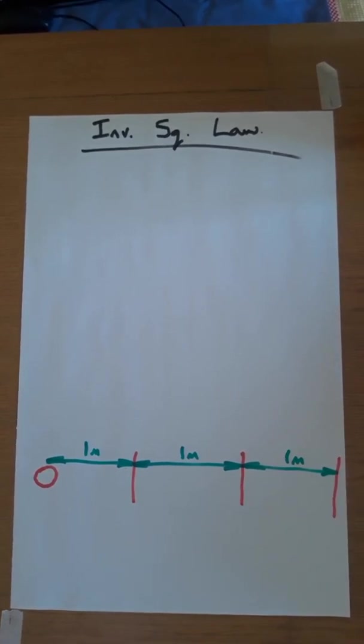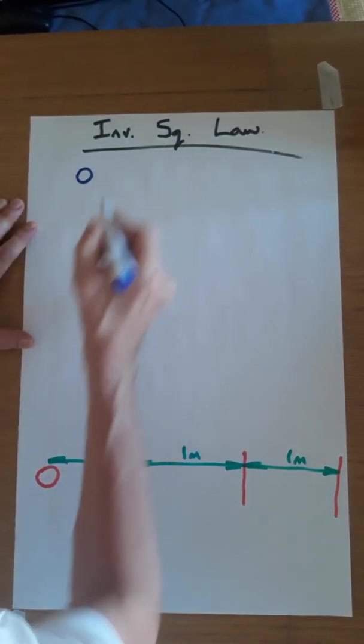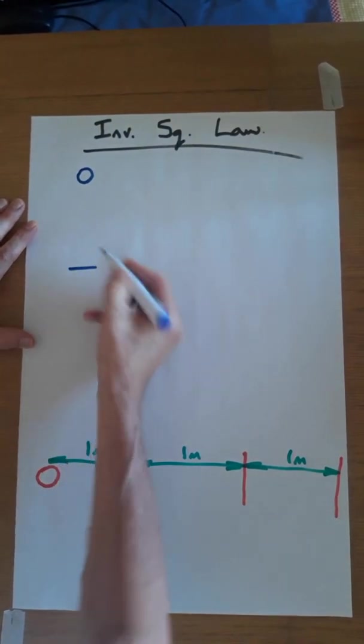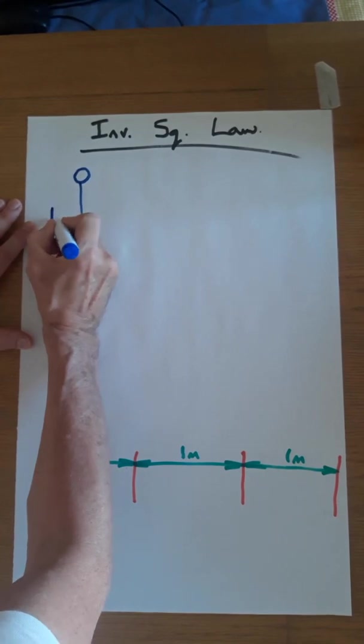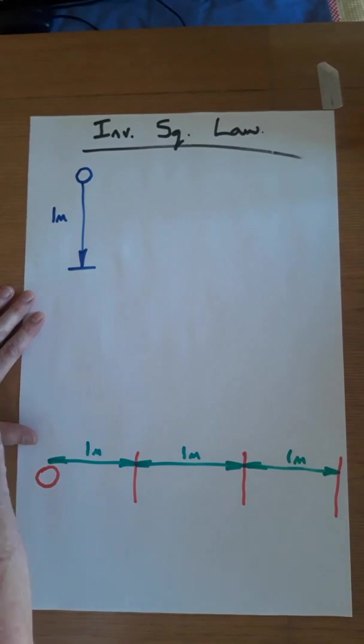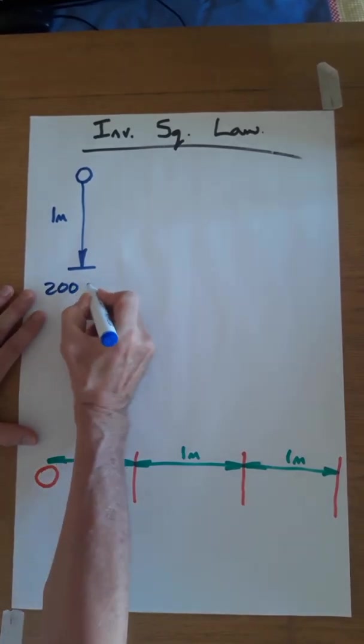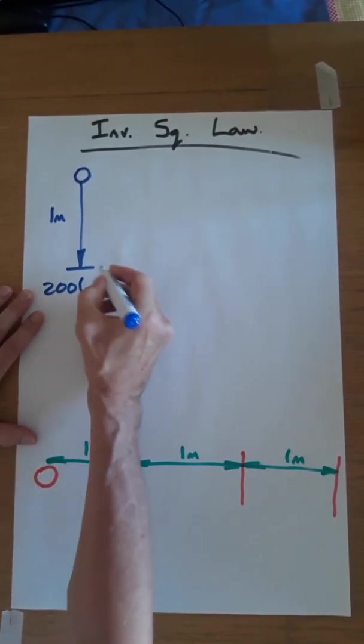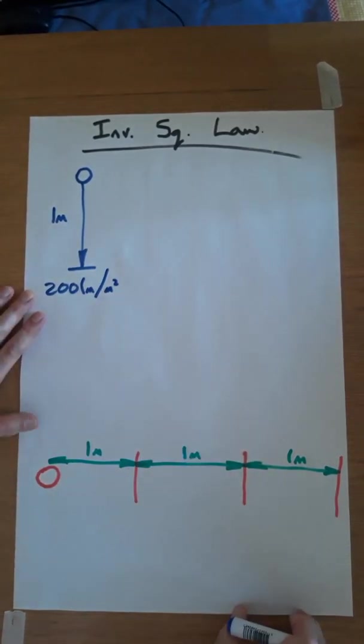So if we have a very quick look at this, imagine here is our light source and this is a surface one metre away. Then a certain amount of illumination will occur on this surface. So let's suppose for the sake of arguments we get 200 lumens per square metre. To you and me that's 200 lux.